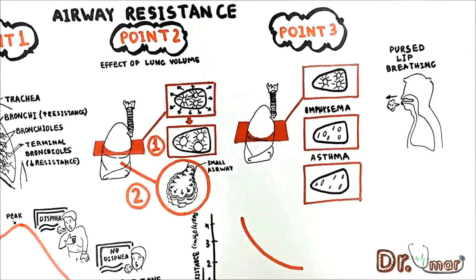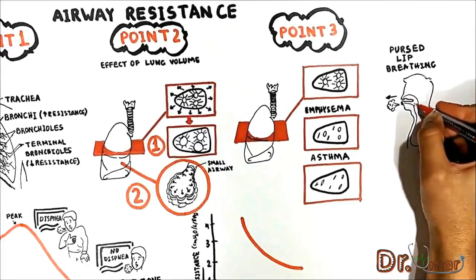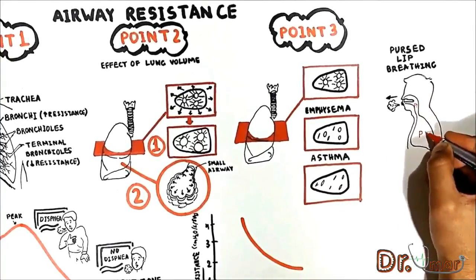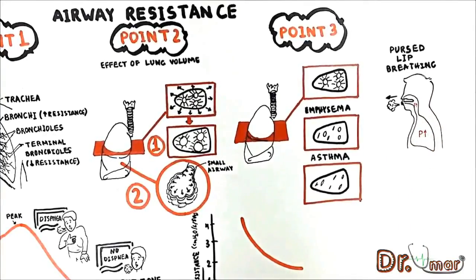Pursed lips create a resistance point. As a consequence, you increase the pressure before that point. Pressure builds up in airways and this prevents the airways from collapsing.